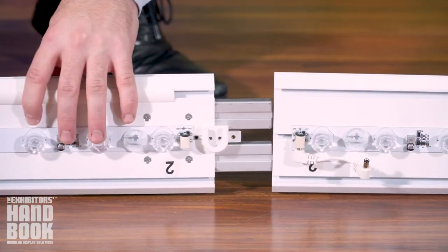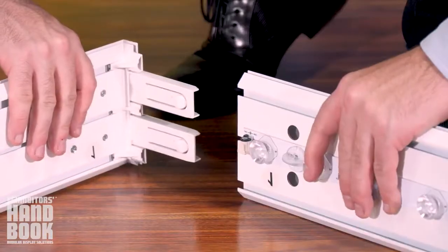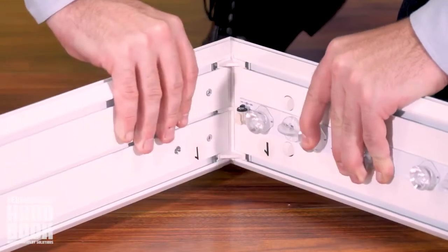Making sure the U-shaped hook is facing upwards, connect the two bottom pieces of the frame. When everything is secure, continue connecting the extrusion pieces.